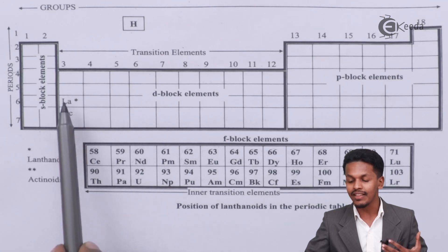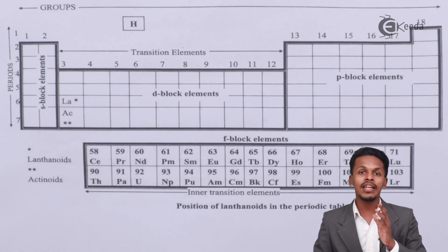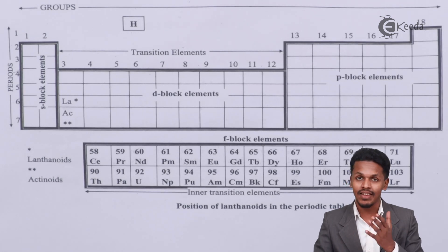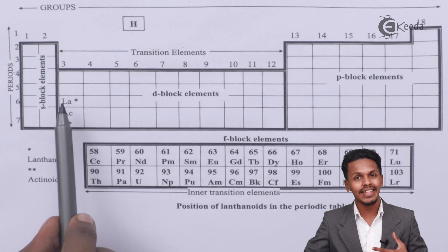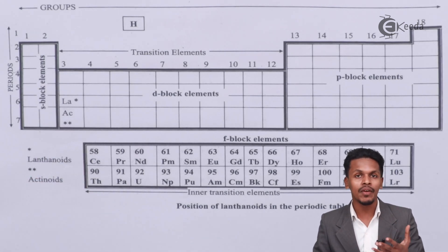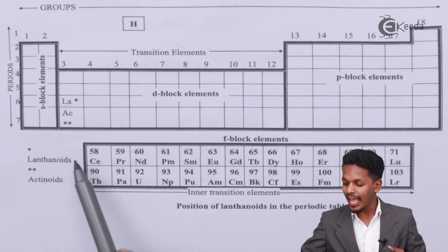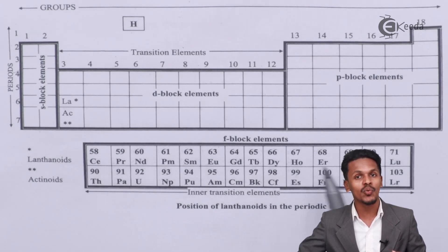That is the position is sixth period and the third group. So not only in terms of the atomic size but also in terms of the chemical reactivity as well as the valency. So talking about the valency, since lanthanum is belonging to the third group, therefore we could say that the valency of this element would be 3. So it is applicable to every element that is basically present over here.